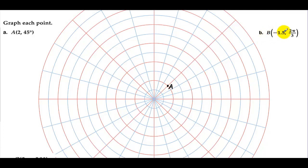Point B is -1.5 units from the pole at 2π/3. Each of these divisions is worth π/12. So π/3 is right there, 2π/3 is right there, but instead of going 1.5 along 2π/3, we're going to go 1.5 in the opposite direction. So there's 1.5 along 2π/3. So this is point B.